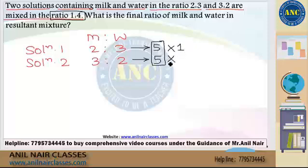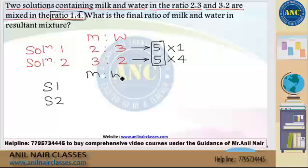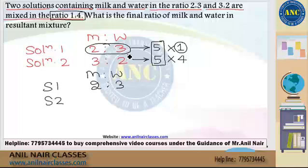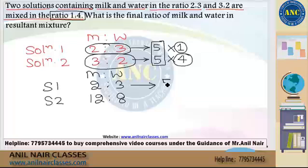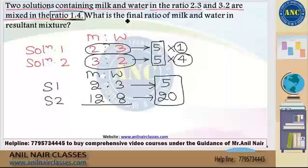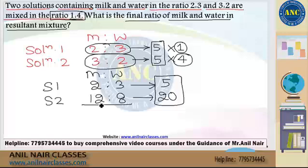Multiply solution 1 by 1 and solution 2 by 4. So solution 1 stays 2:3, and solution 2 becomes 3×4=12 milk and 2×4=8 water. Check: 2+3=5 and 12+8=20, giving ratio 5:20 = 1:4, as required. Milk finally is 2+12=14. Water finally is 3+8=11. The final ratio of milk and water in the resultant mixture is 14:11.